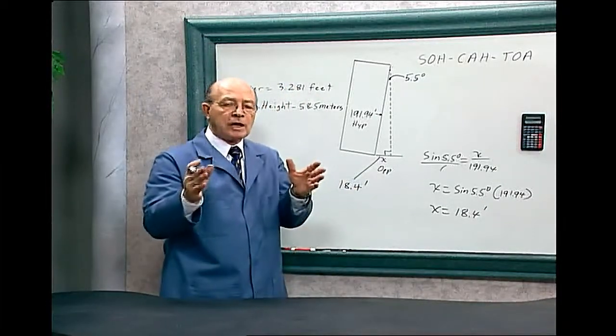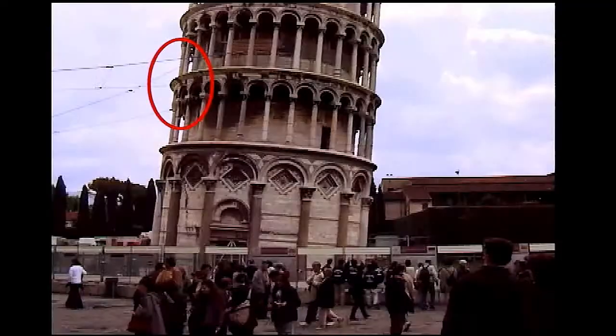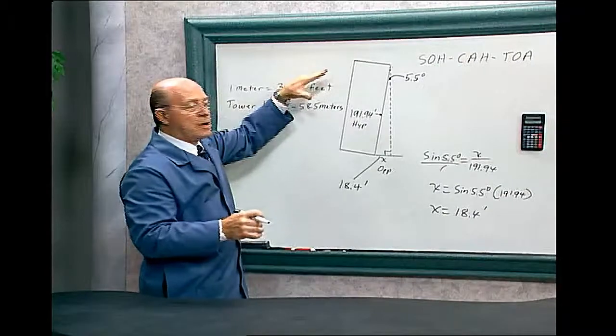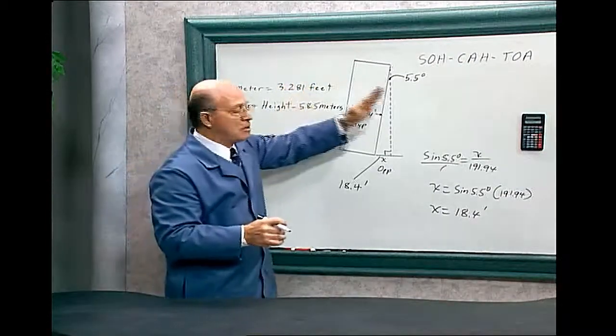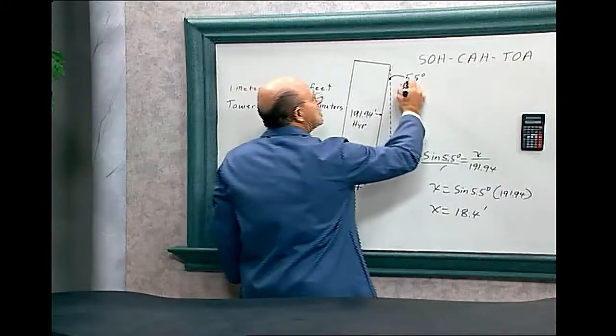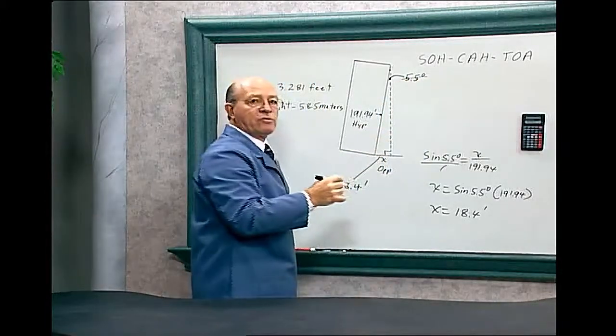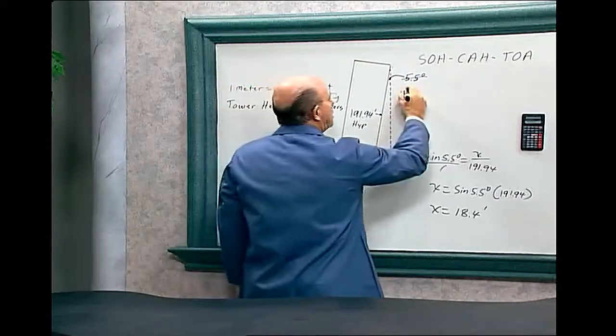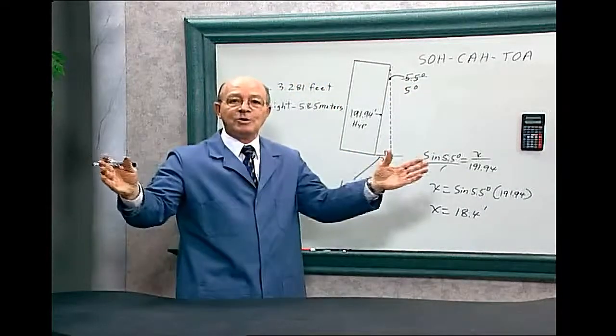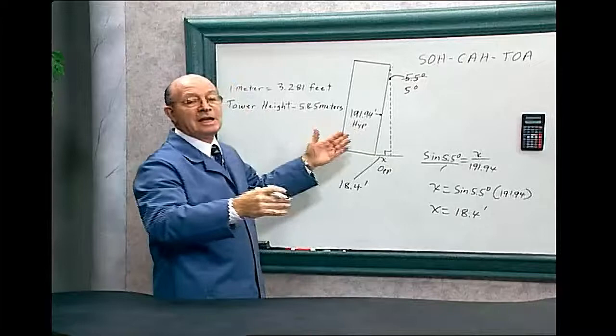Now look again at that video shot. Notice they have cables holding this tower. They're afraid that this tower is going to tilt over. And so now they want to change this, not 5.5 degrees. They wanted to make it 5 degrees. They don't want to make it straight, because tourists wouldn't come to see this famous leaning tower.